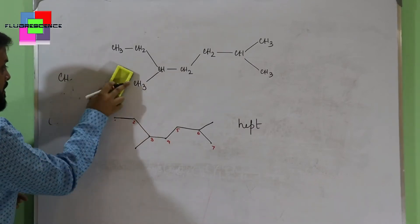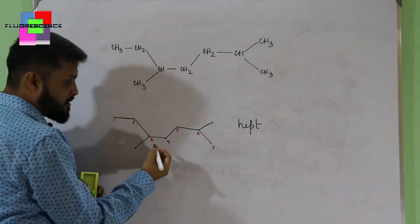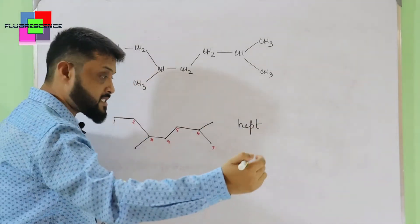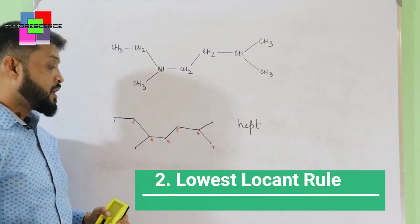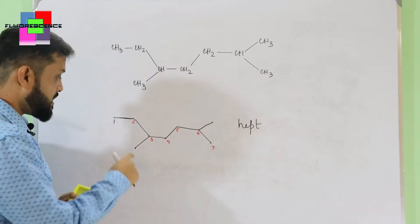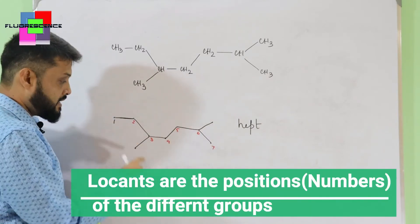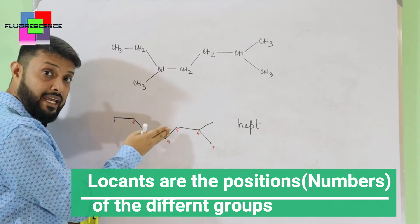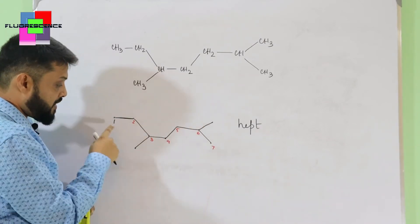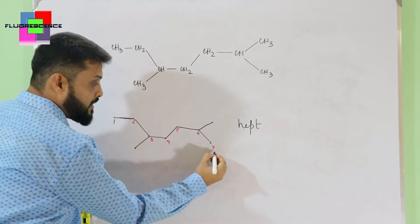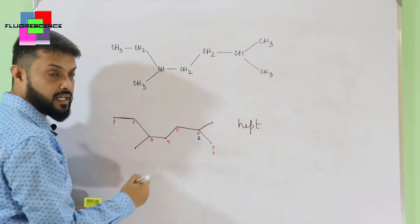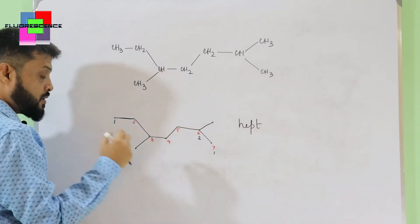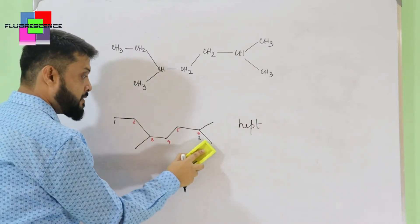Now let's apply the lowest locant rule — this is the next step. The numbers assigned to positions are called locants. We start from the end where we get the least locant. If I start from one end, the first substitution comes at position 3. If I start from the other end, the first substitution comes at position 2. Since we get the least locant starting from the second end, we start our numbering from there: 1, 2, 3, 4, 5, 6, 7.